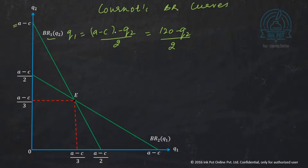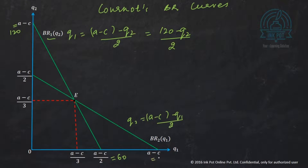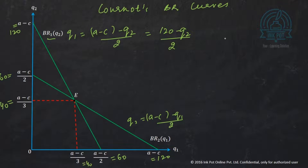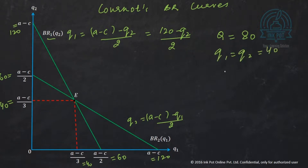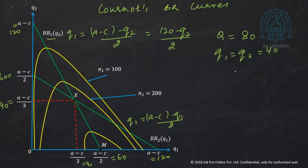When you solve the two reaction curves simultaneously with A=120 and C=0, you get Q1 star = Q2 star = (A minus C)/3 = 120/3 = 40. The total industry quantity is therefore 80. Since the total market was 120, one-third (40 units) remains unfulfilled. The two isoprofit lines intersect at the Cournot equilibrium point E where firm 1 produces 40 and firm 2 produces 40.